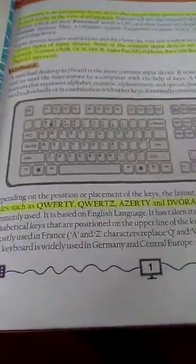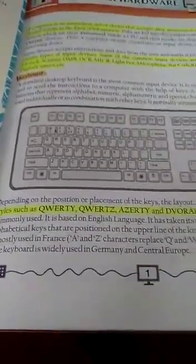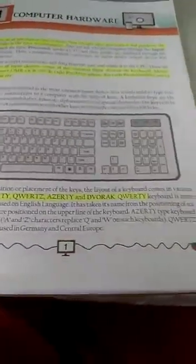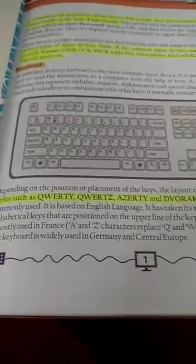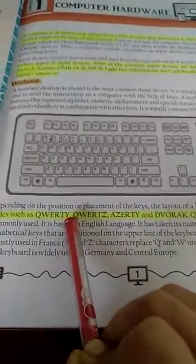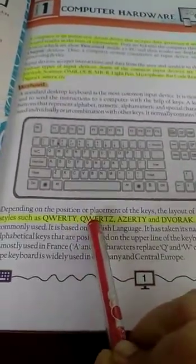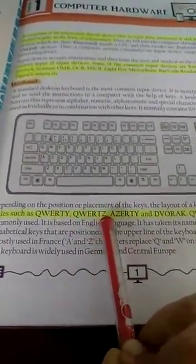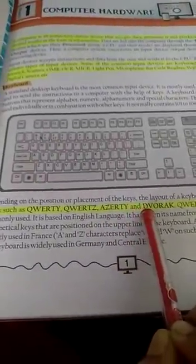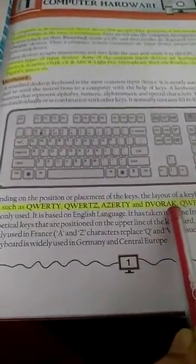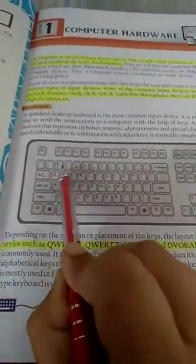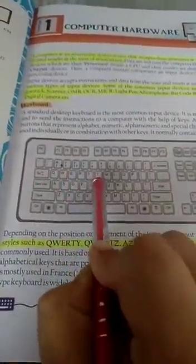Children, depending upon the position or placement of the keys, the layout of the keyboard comes in various styles such as the QWERTY keyboard, QWERTZ keyboard, AZERTY and DVORAK keyboards. The figure here represents the QWERTY keyboard.